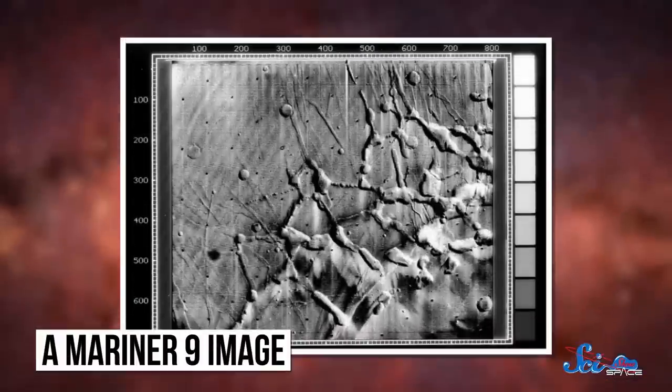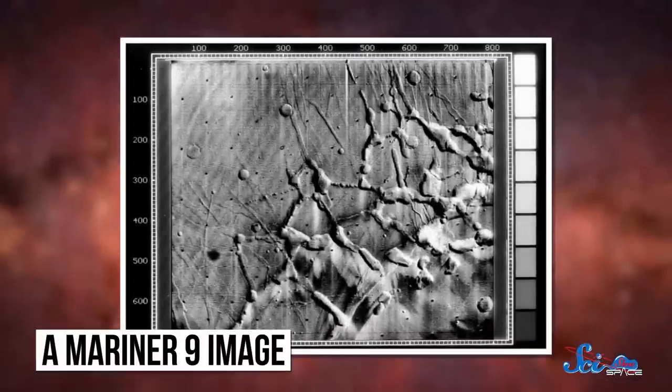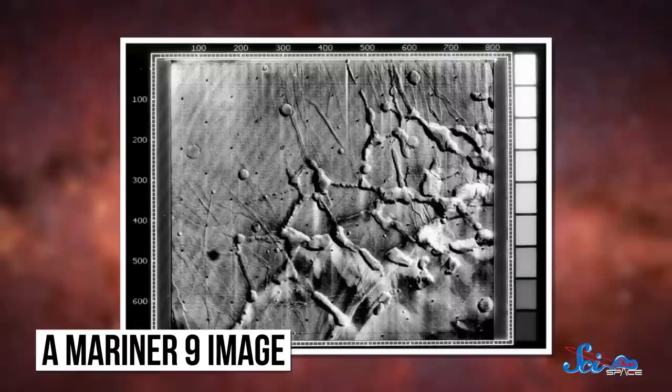In the end, Mariner 9 imaged 85% of the Martian surface, taking more than 7,300 pictures, which was way more than the other missions. It also taught us more about Mars' atmosphere and surface. So this whole orbiting thing worked out great!